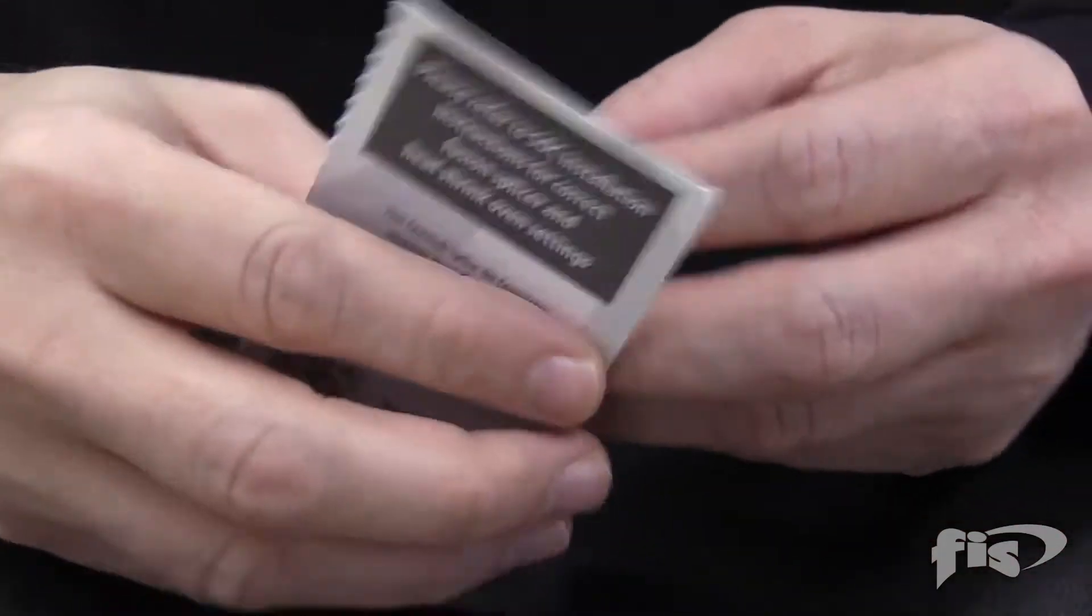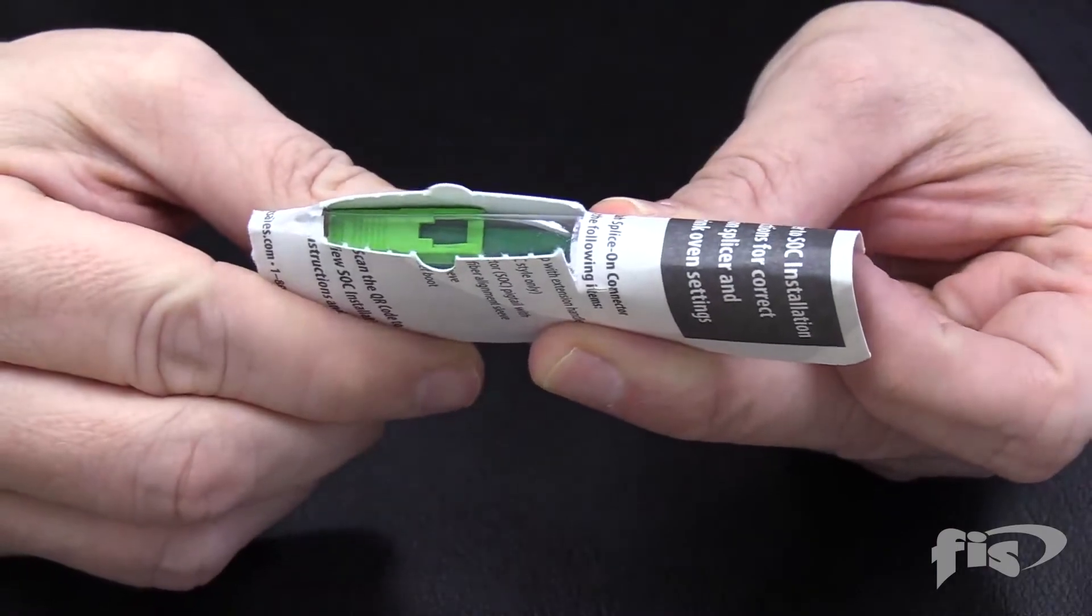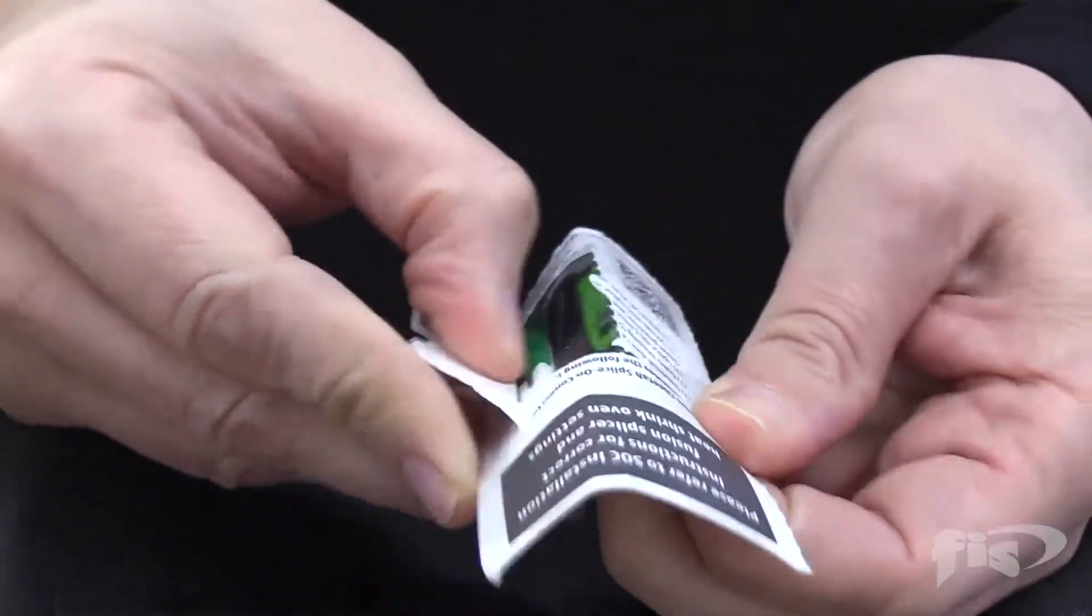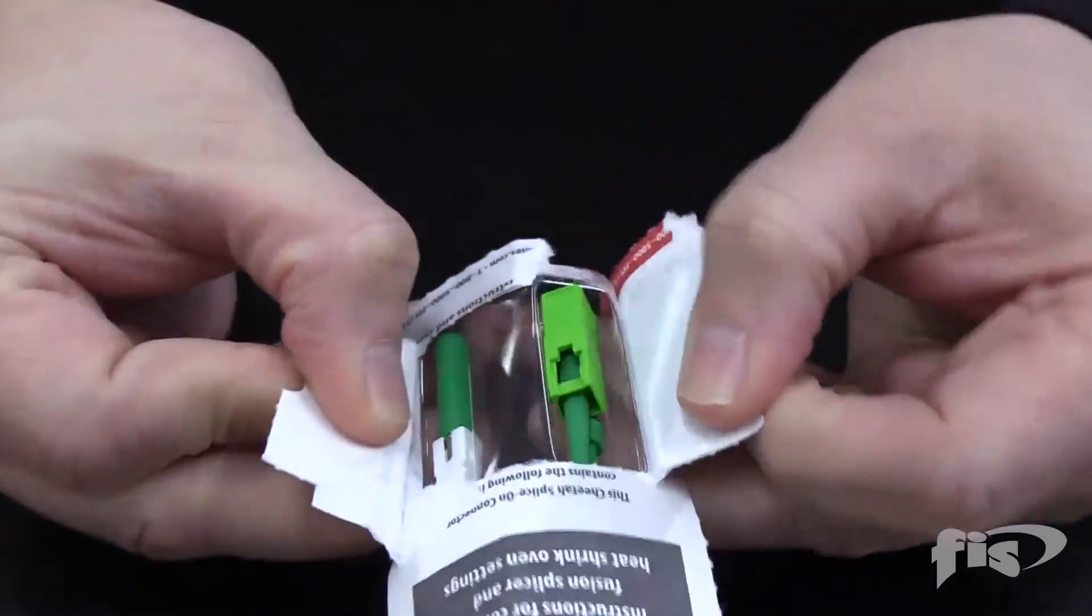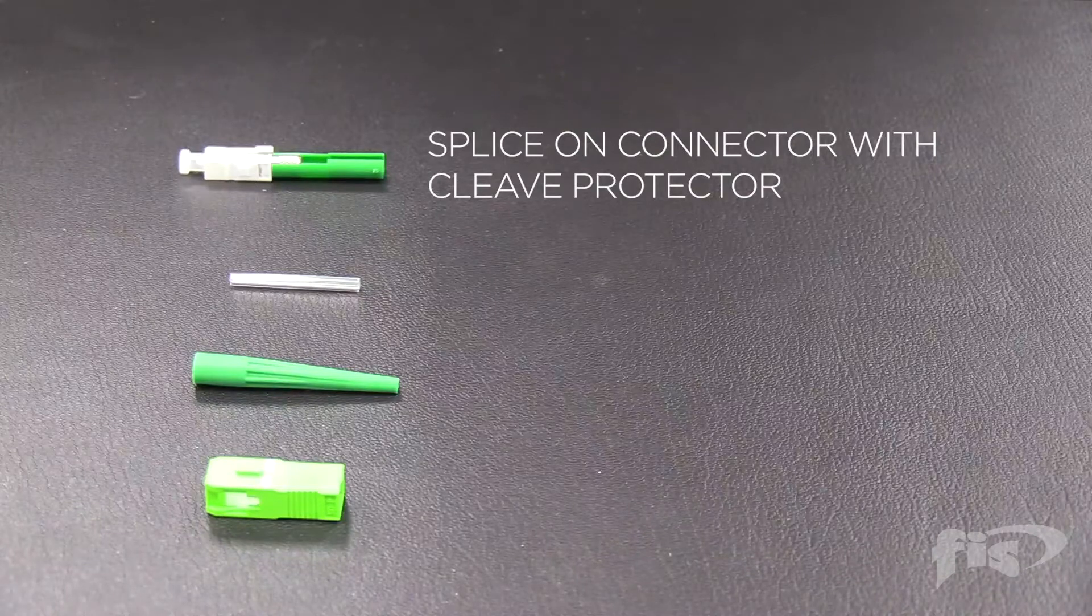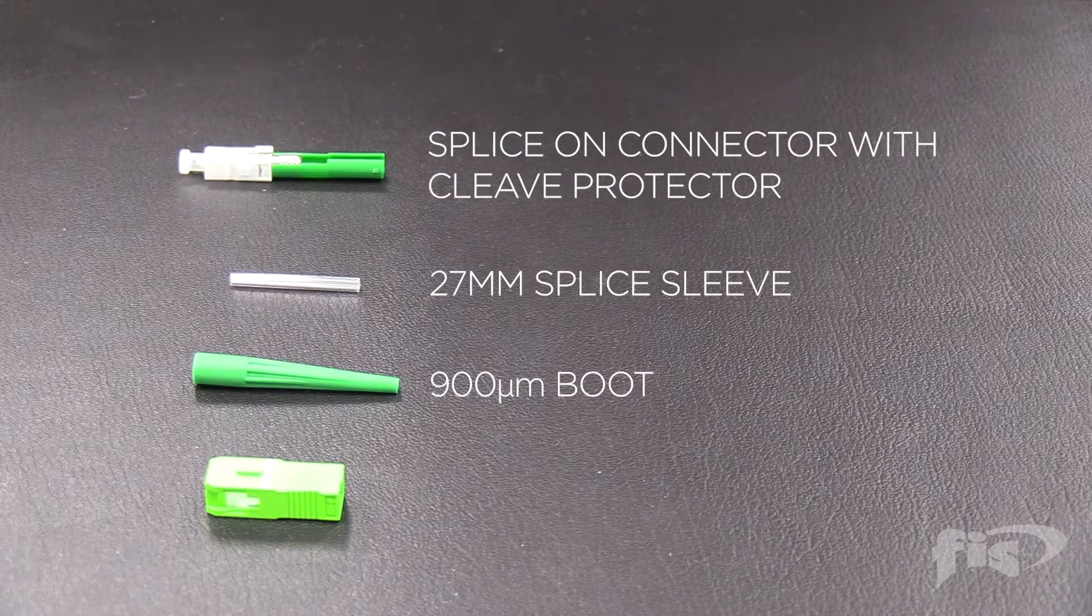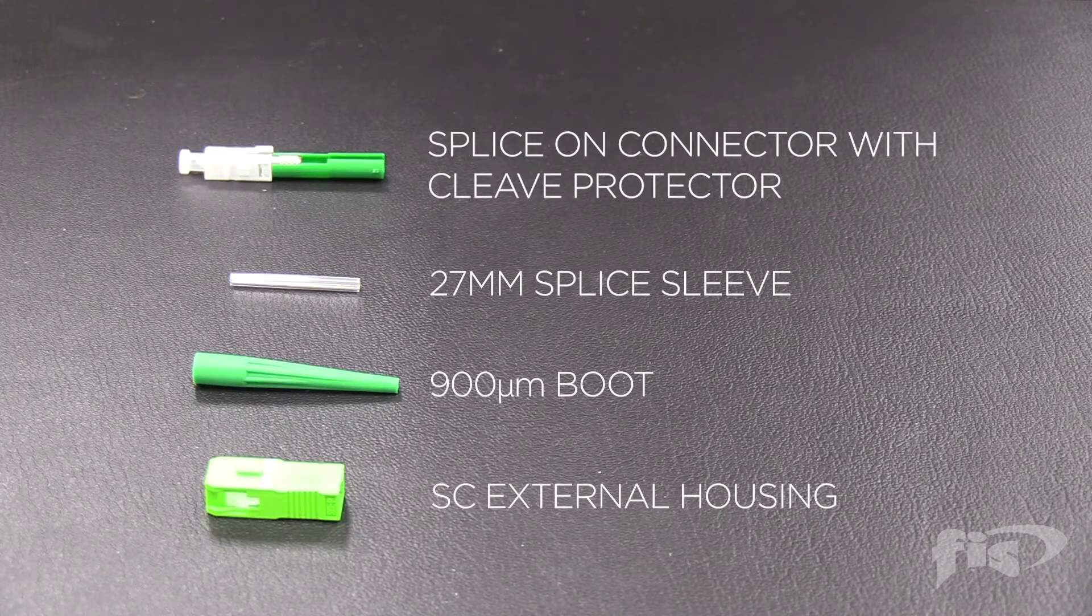Take the FIS splice-on connector blister pack and turn it upside down. Fold in half and open it from the back. In the pack, there is the splice-on connector with cleave protector, 27mm splice sleeve, the custom 900 micron boot, and the SC external housing.